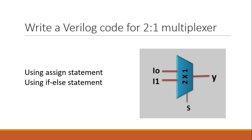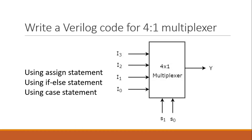Now let us move to the next question. You have to write Verilog code for a 4-to-1 multiplexer, and there are three sub-parts: first using an assign statement, then using an if-else statement, and then using a case statement — which is very popular for implementing multiplexers. Let us cover the first part using an assign statement. Before going to the code, I want you to understand how this multiplexer works.